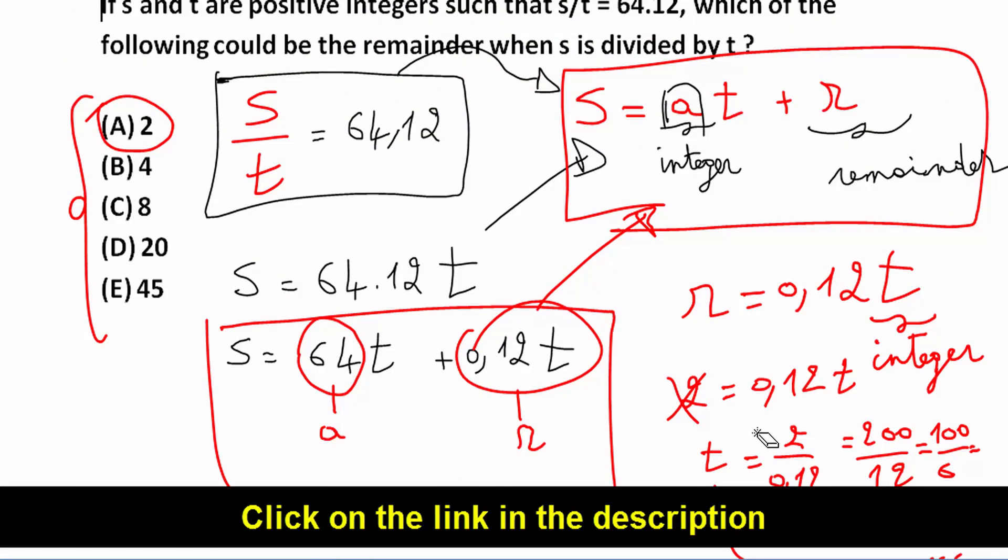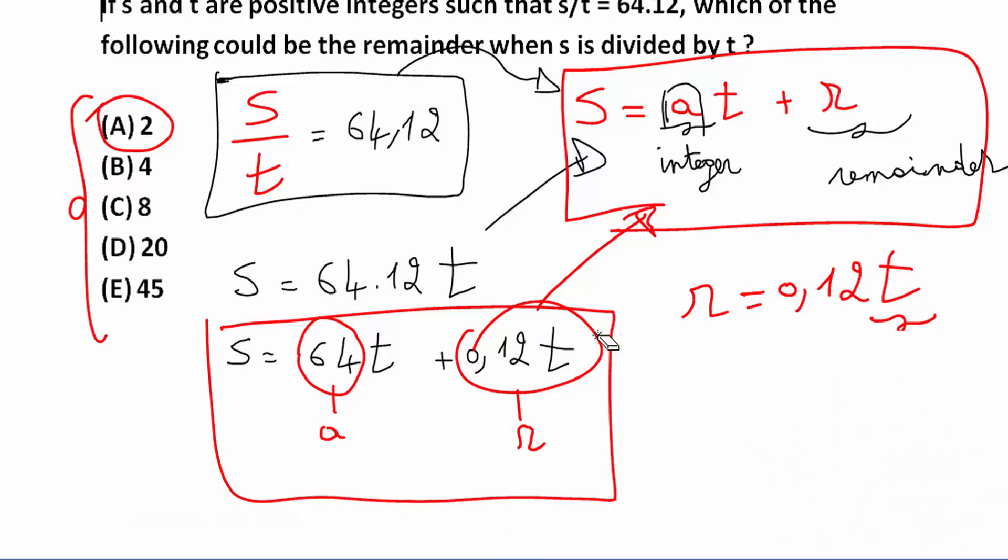So I repeat: the remainder is equal to 0.12 T. And I know that T is an integer. So T must be an integer.